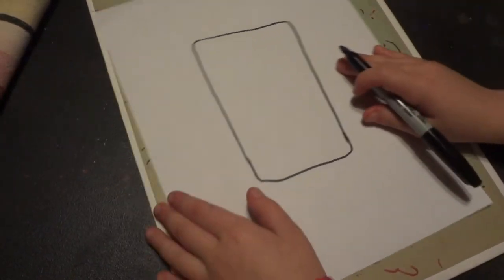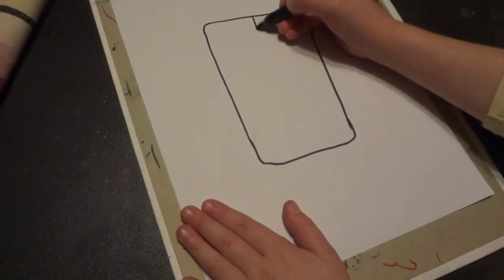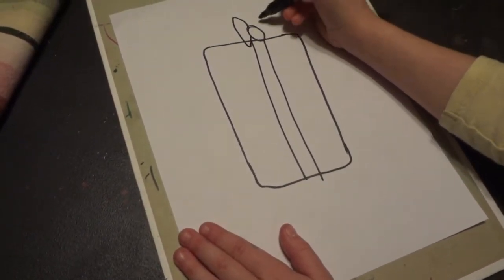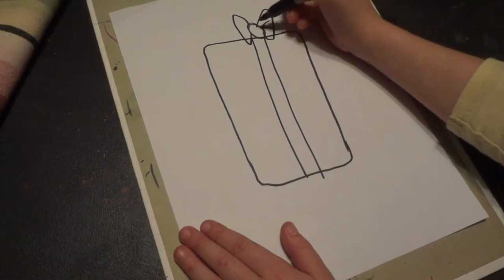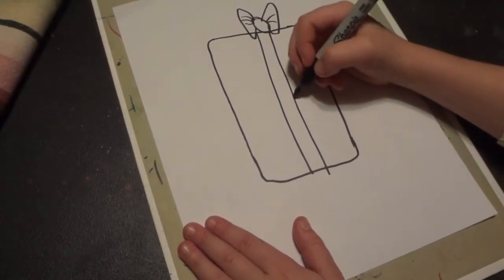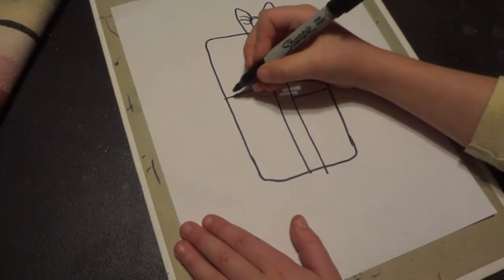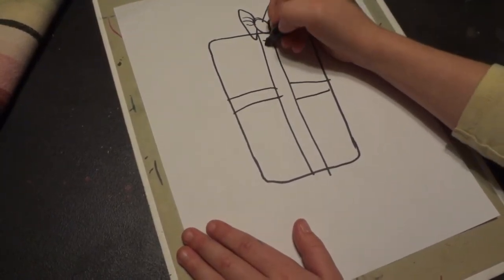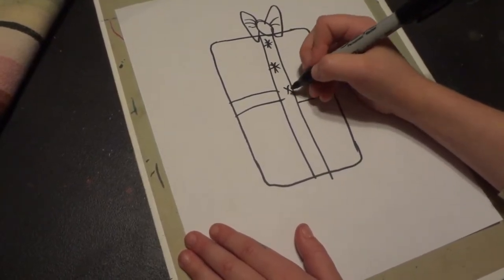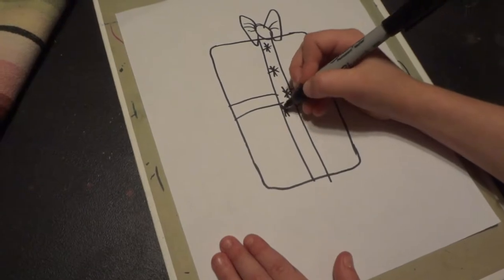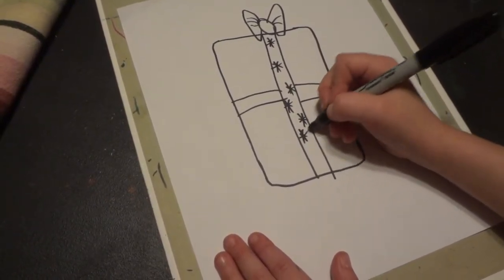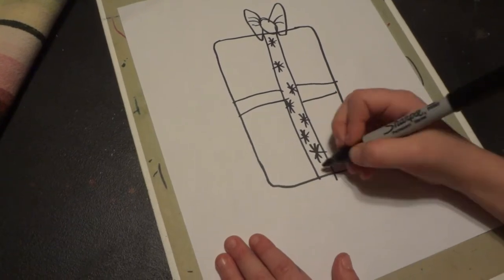And then we are going to draw the ribbon like that. And then we're going to draw the other ones. And then we're going to draw little snowflakes on the ribbon like that. And then let's just finish up this ribbon real quick.